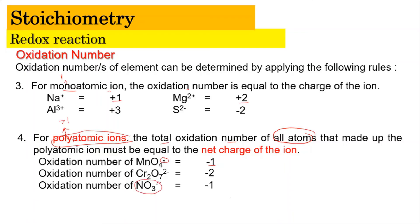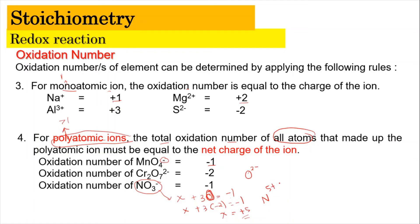Using Rule 4, we can determine the oxidation number of nitrogen in NO3-. Let the oxidation number of N be x. We have x plus 3 oxygen atoms, each with a charge of -2, equal to the molecular charge of -1. So: x + 3(-2) = -1, which gives x + (-6) = -1, so x = +5. Therefore, the oxidation number of nitrogen in NO3- is 5+. This is how you determine the oxidation number of an element within a polyatomic ion.